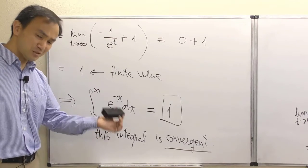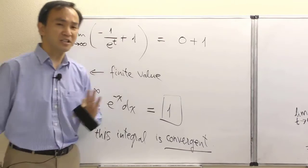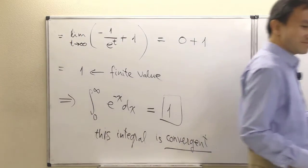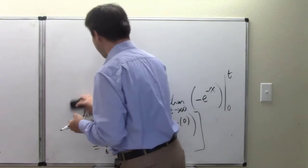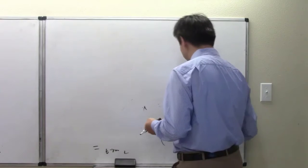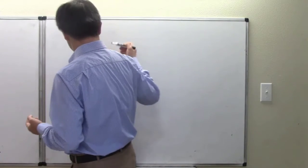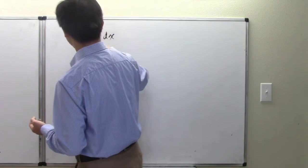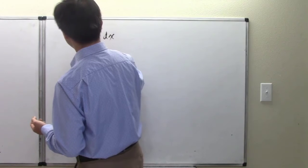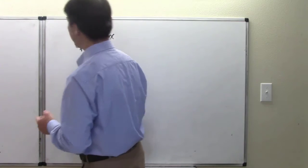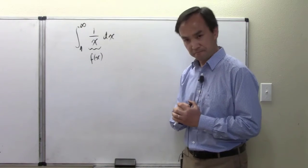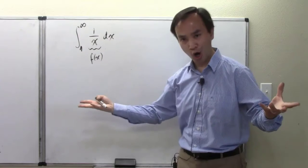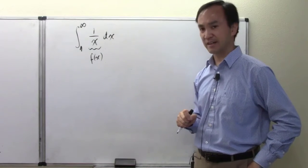Let's look at another problem. What about the integral of one over x from one to infinity? Again, infinity is not a number to plug in — that's why this kind of problem is called an improper integral.